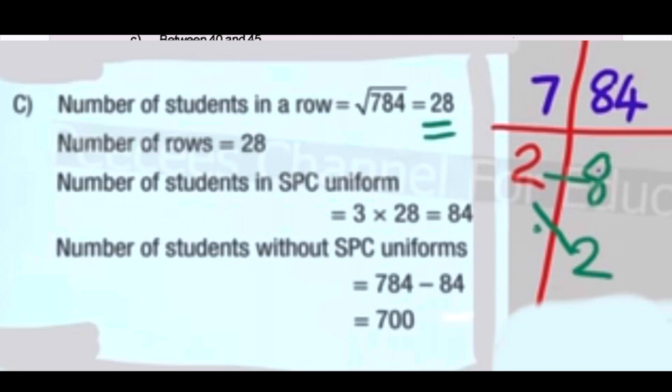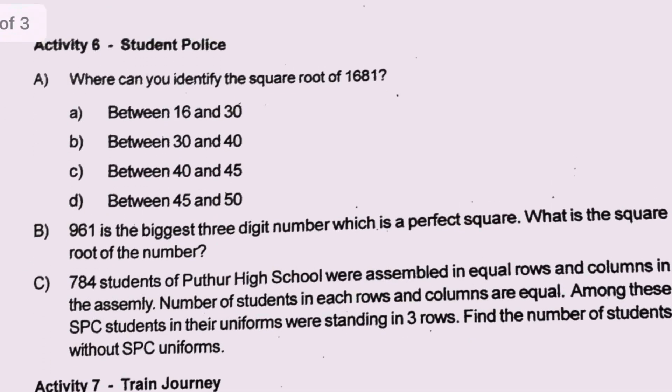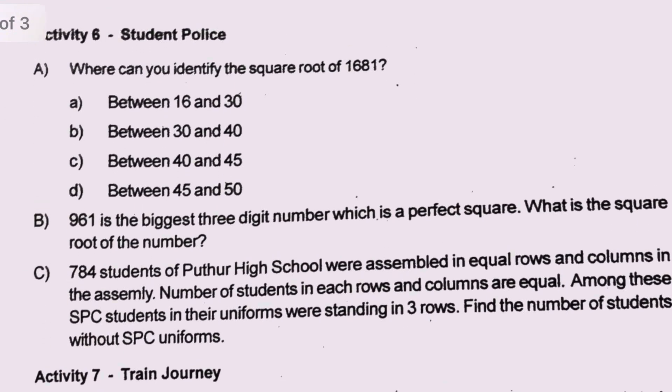The number of students in a row equals square root of 784, which is 28. Number of rows is 28. Number of students in SPC uniform equals 3 times 28, which is 84. Number of students without SPC uniforms equals 784 minus 84, which equals 700.